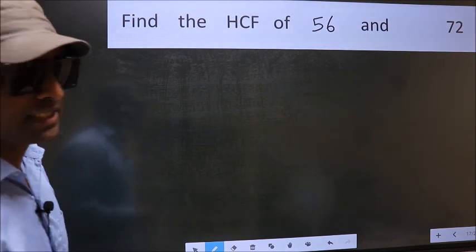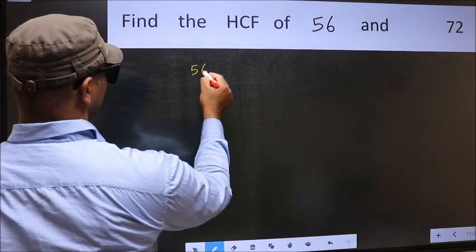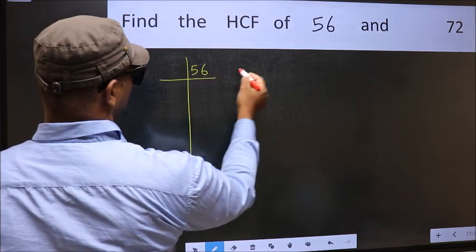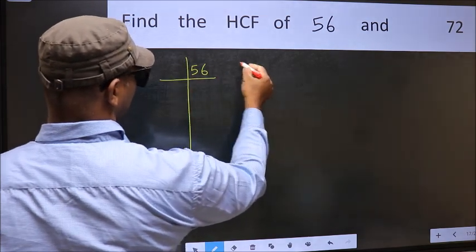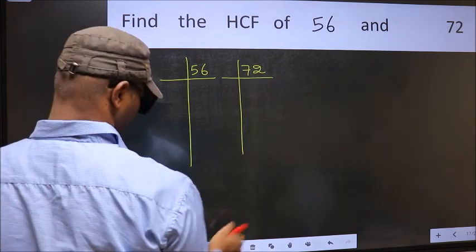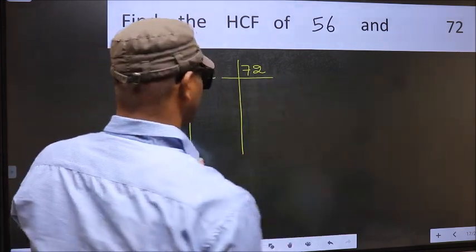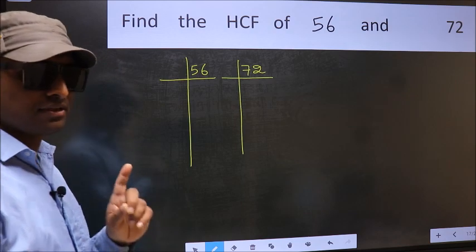What I mean is 56 and 72. This is your step 1.